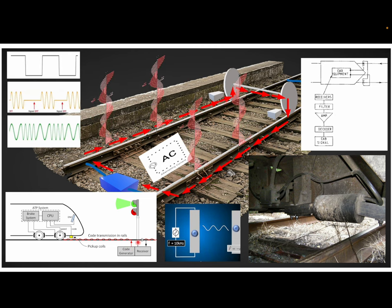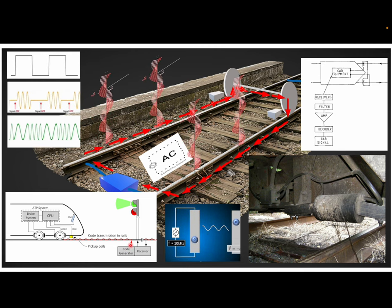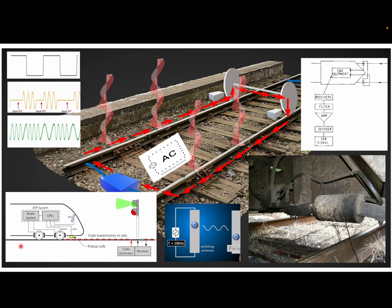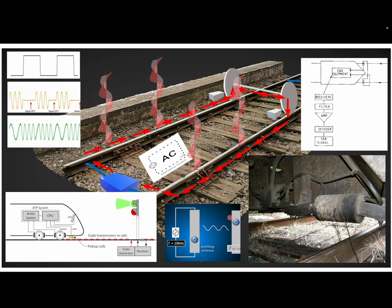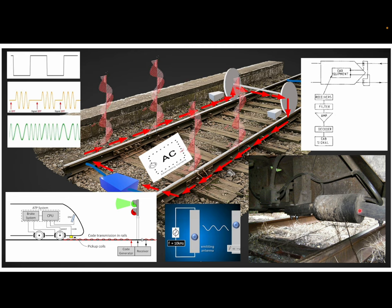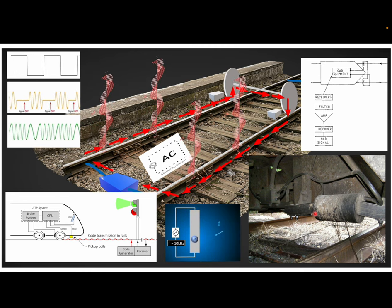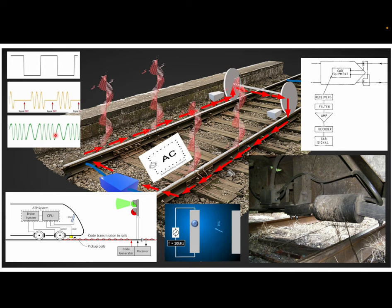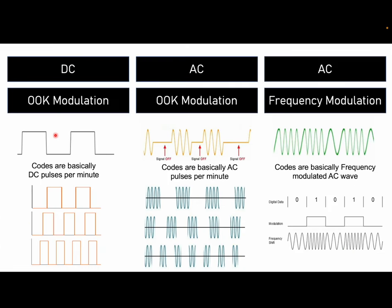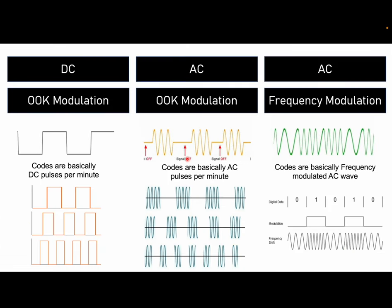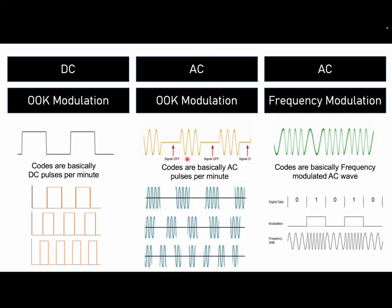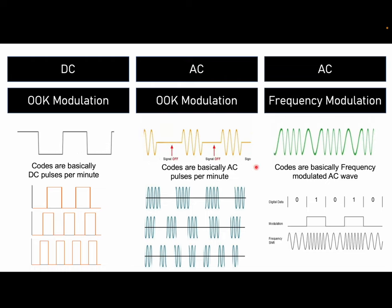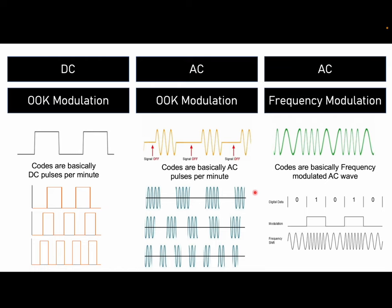This diagram clearly shows that you have transmission in the rail, which is picked up by the pickup coils, which is then used by the CPU on the train. This is an example of how pickup coils look. These are the three different waveforms I will discuss now. Fundamentally, these are the three types of coded track circuits in use today.